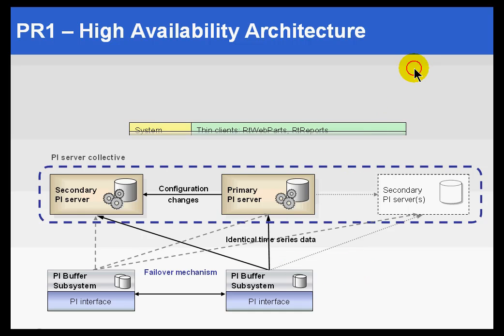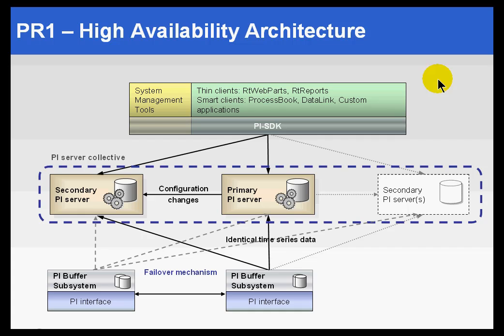And finally, all of the clients are going to automatically shift their focus to whichever server is currently running. We can also do some load balancing if we choose to explicitly define that certain clients go to the primary and others go to the secondary when both are available. But when one server fails, all clients go to the other server.